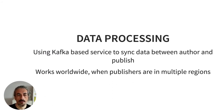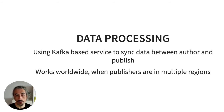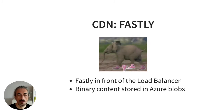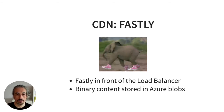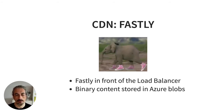For data processing, we have a Kafka-based service that allows syncing of data between author and publish instances worldwide across multiple regions. Customers who create content may publish to websites and assets in multiple regions, and this Kafka-based service keeps all those regions in sync. For CDN we use Fastly in front of our Kubernetes load balancer, and it also fronts the binary content stored in Azure Blob.